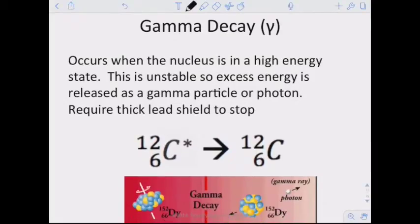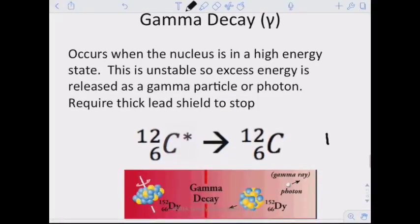The next decay we're going to talk about is gamma decay. It occurs when a nucleus is in a high energy state, unstable. Excess energy is released as a gamma particle or a photon, requiring a thick lead shield to stop it. The main thing with gamma decay: on the other two, the alpha and the beta, we saw that there was a change in mass. Here we don't see that change in mass. We're going from this excited state to this gamma radiation, putting off essentially just a photon.